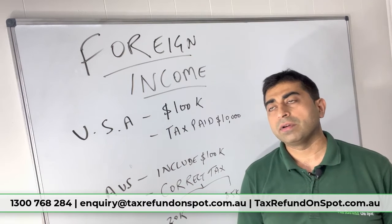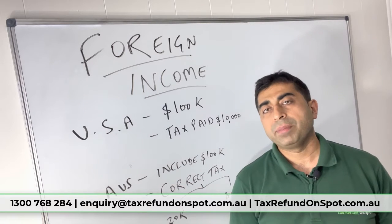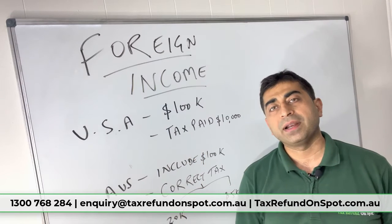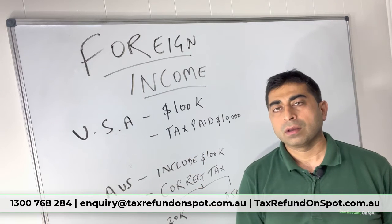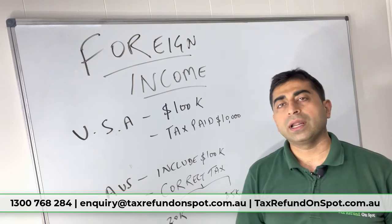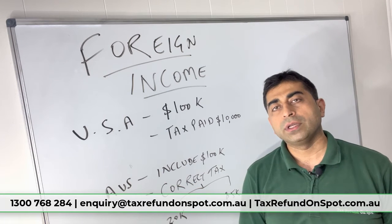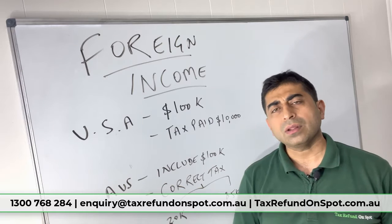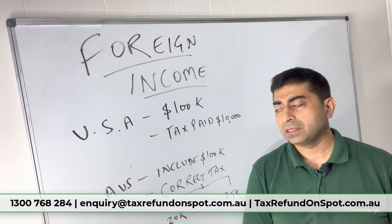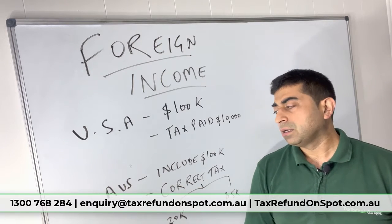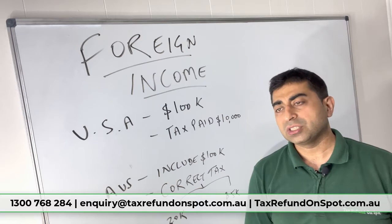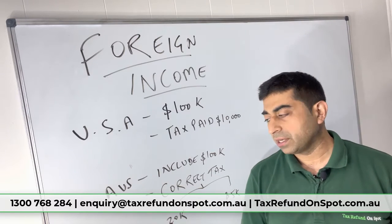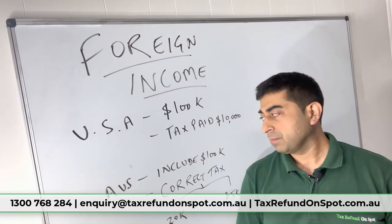You made a hundred thousand of income there, and the tax you have paid there is, let's say just as an example, ten thousand dollars. So that hundred thousand and that ten thousand you have to include in your Australian tax return. Once you put the income and tax paid in your Australian tax return, just for an example, the correct tax as per Australian law is thirty thousand.